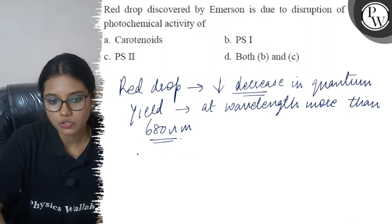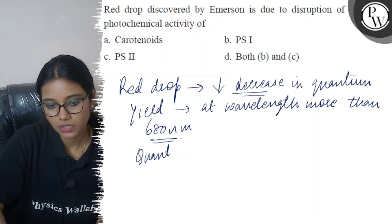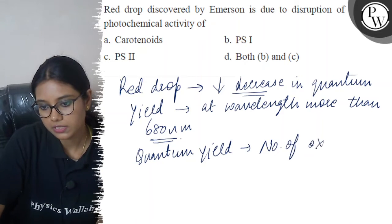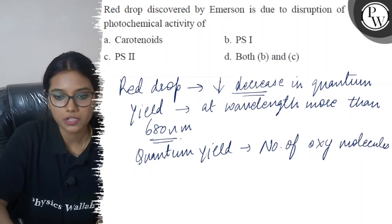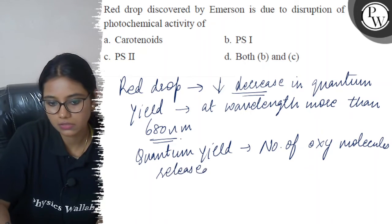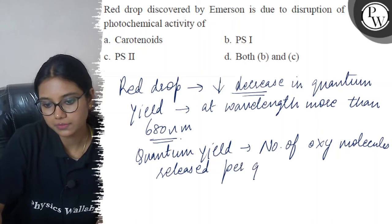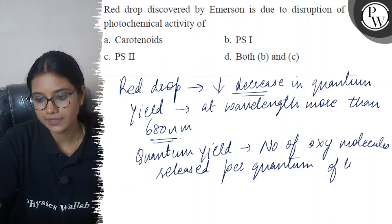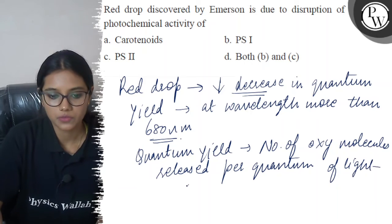Quantum yield is the number of oxygen molecules released per quantum of light absorbed.